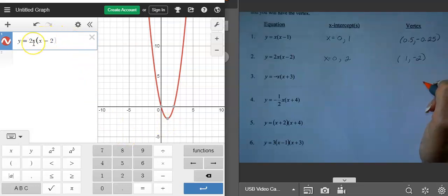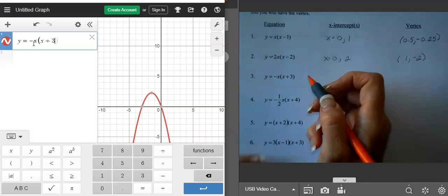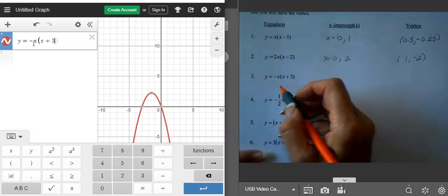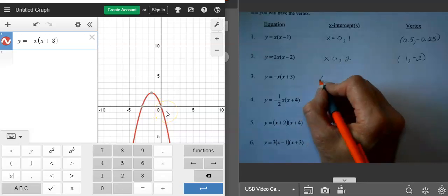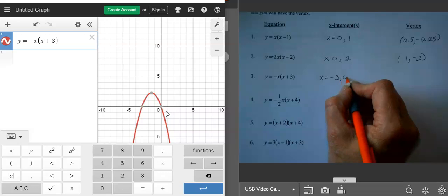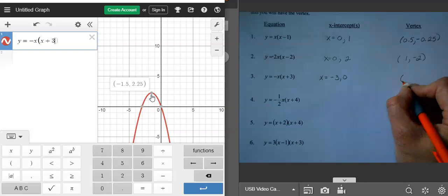For example 3, let's go back and I'm going to put a negative x, and then I have x plus 3. And if you look at it, it's graphing that. Notice the a value here was negative, so it does open down. My two x-intercepts are negative 3 and 0. And then my vertex is negative 1.5, 2.25.